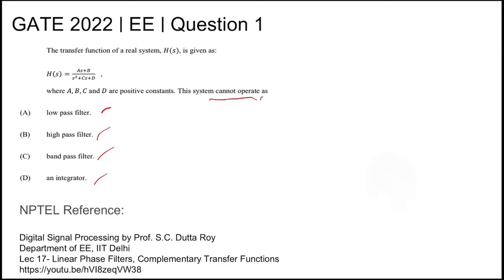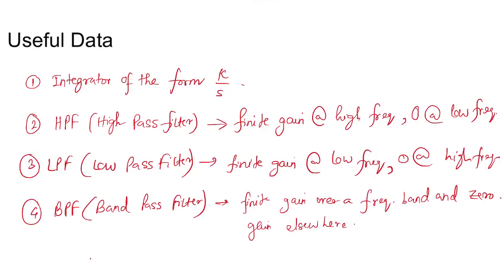Coming to the useful data: If the filter is of the form k/s, it is an integrator. For a high pass filter, it will pass the high frequencies and provide finite gain to higher order frequencies and zero gain to low order frequencies.